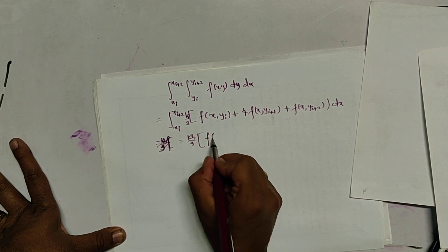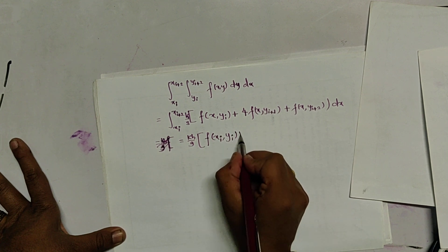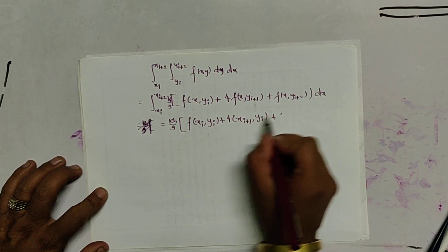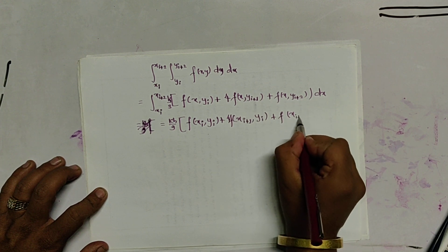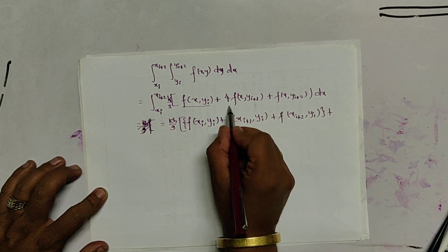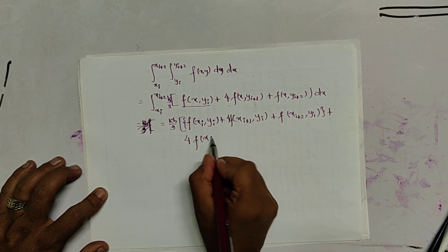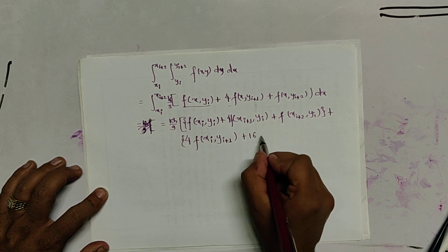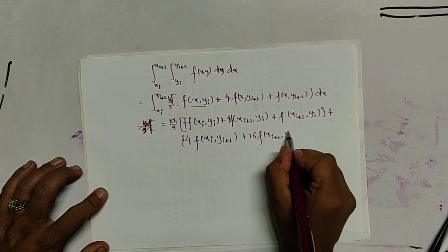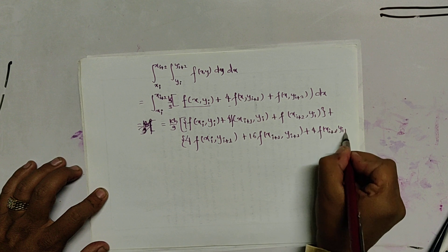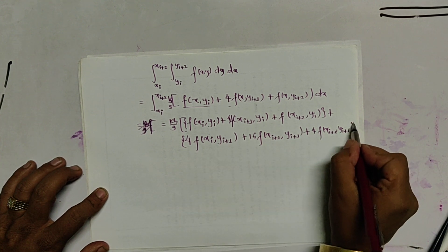Expanding fully, the formula becomes kh/9 times: f(x_i, y_i) + 4f(x_{i+1}, y_i) + f(x_{i+2}, y_i) for the first row. For the middle row from the 4f(x, y_{i+1}) term: 4f(x_i, y_{i+1}), then 4 times 4 equals 16, so 16f(x_{i+1}, y_{i+1}), plus 4f(x_{i+2}, y_{i+1}). This central part is given by this expansion.